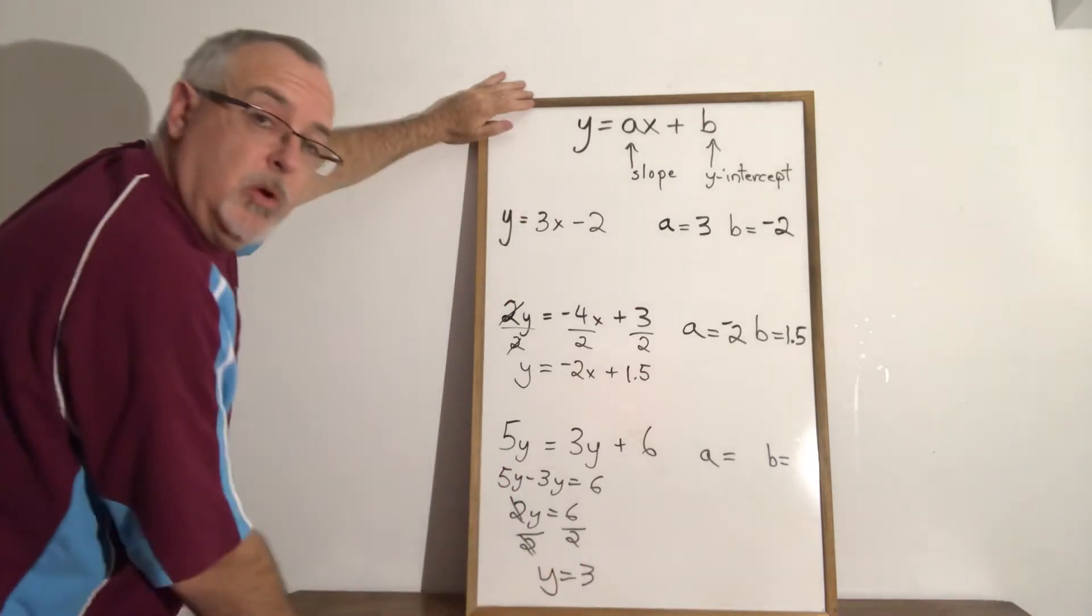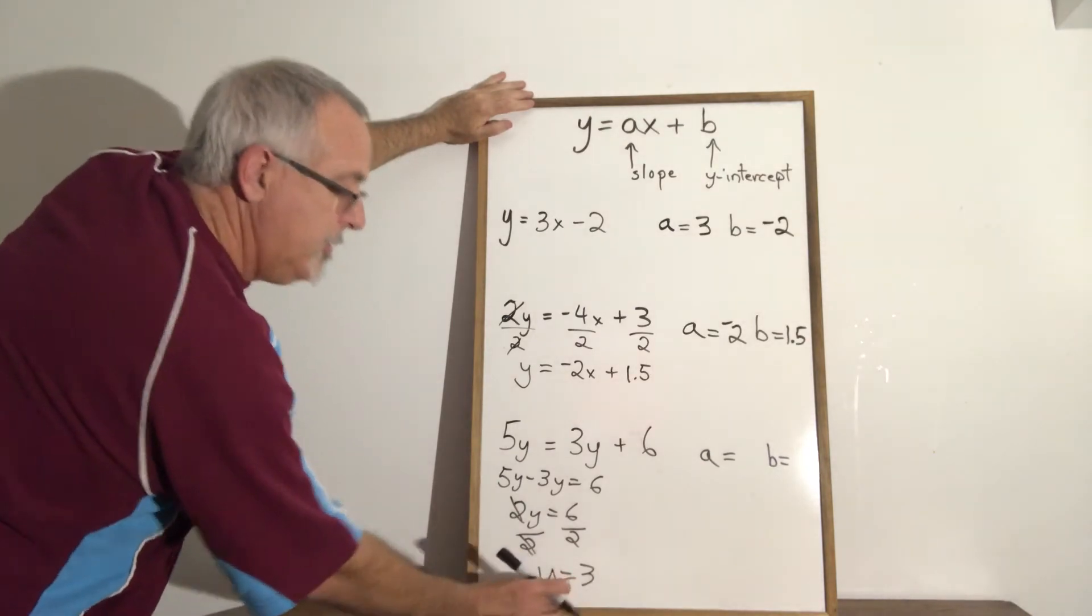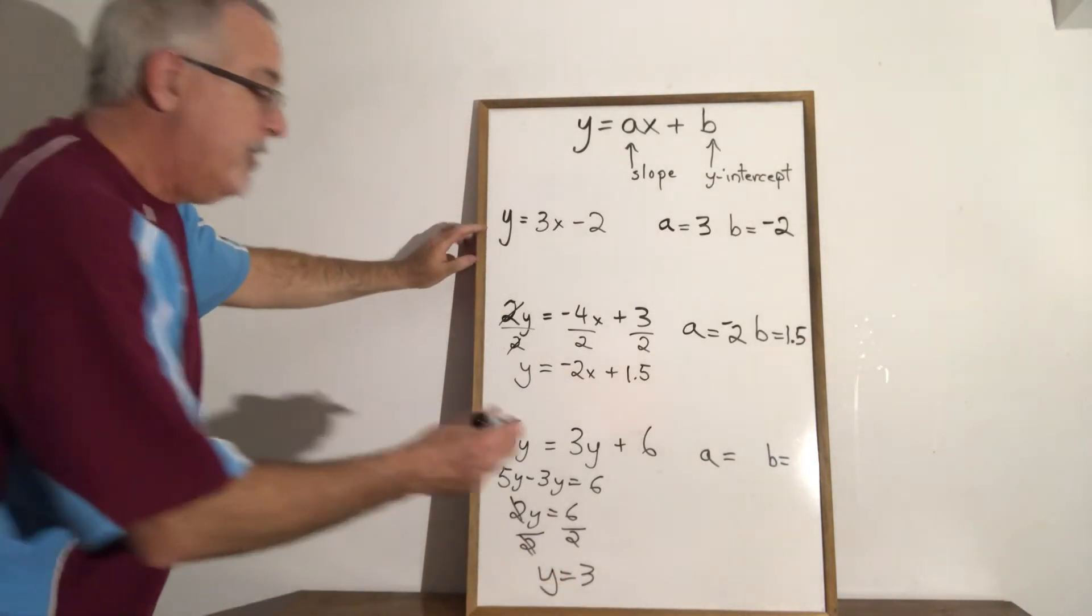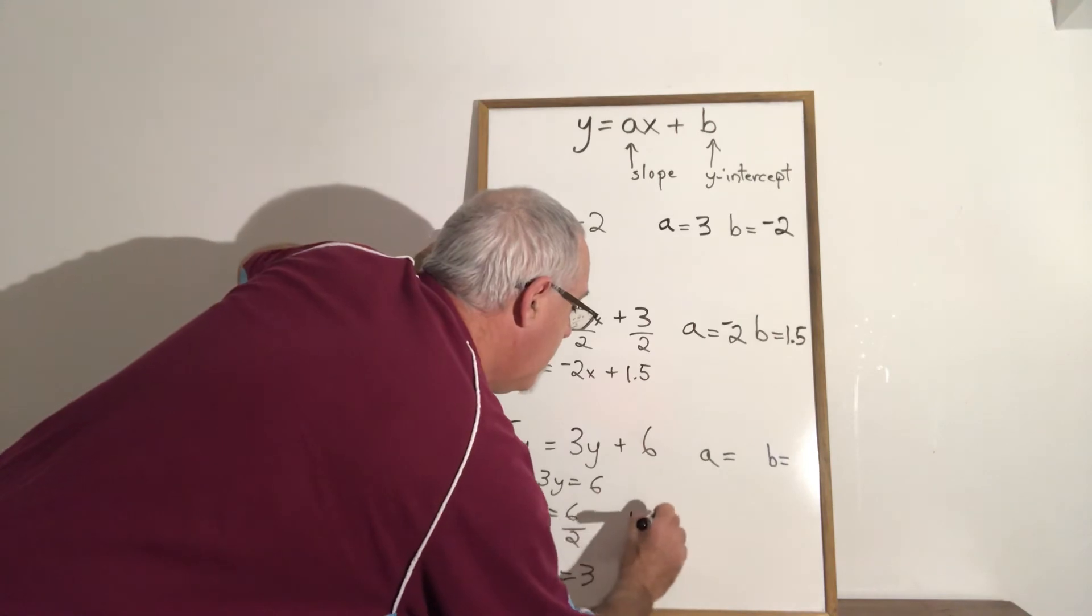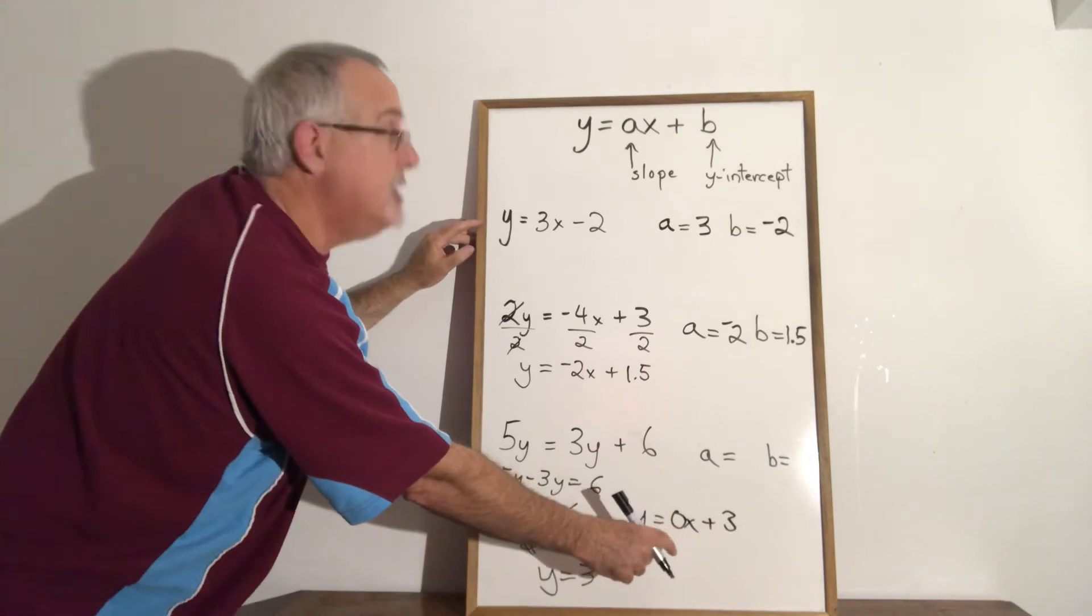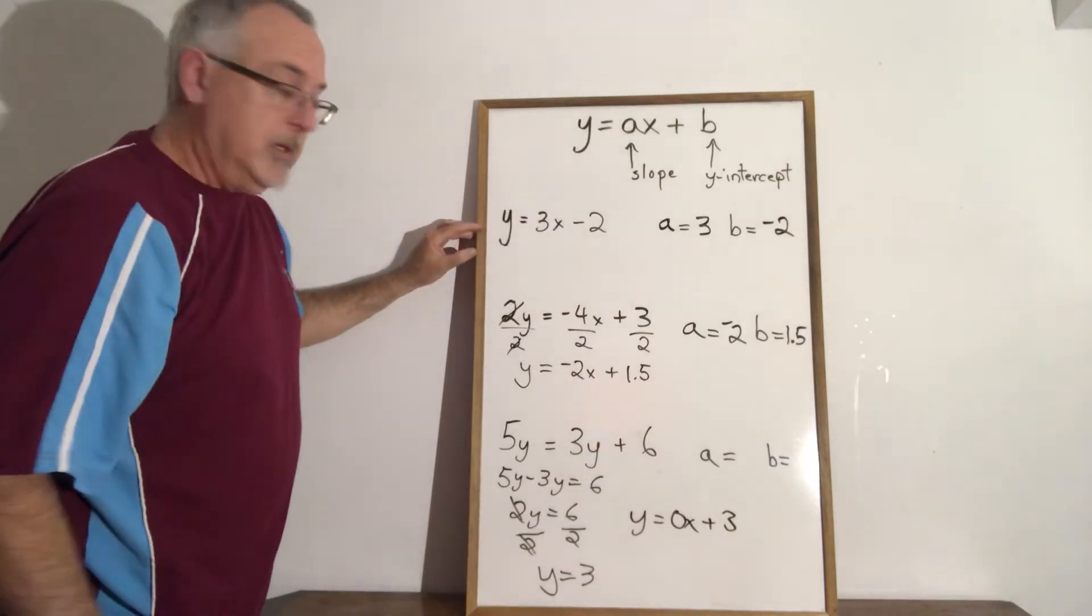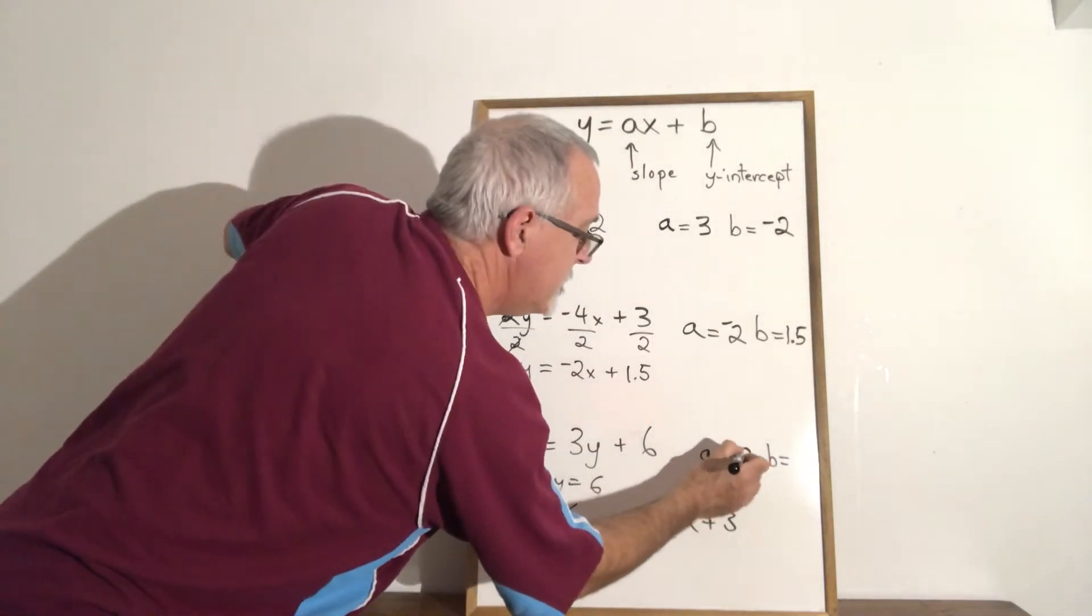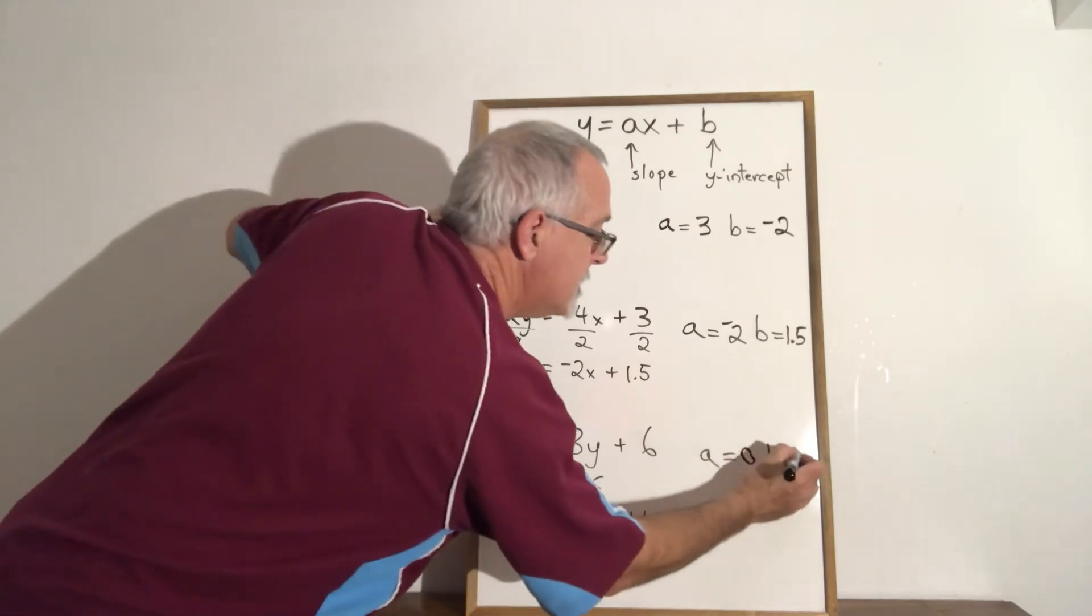Now I can see my slope and my y-intercept if I wish with this form but I can also rewrite this as y equals zero x plus three and even more easily see with the y equals ax plus b form that my slope is zero and my y-intercept is three.